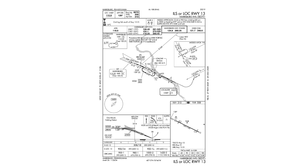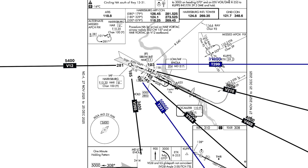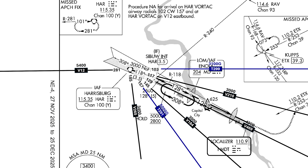First, let's get a lay of the land. Here are just some of the airways that lead into the Harrisburg VOR, which is an initial approach fix for the ILS. The first part of the note says that the procedure is NA for airways from radial 102, which is almost the same radial that T299 is on, then moving clockwise to radial 157.